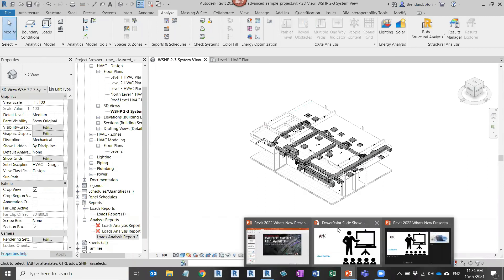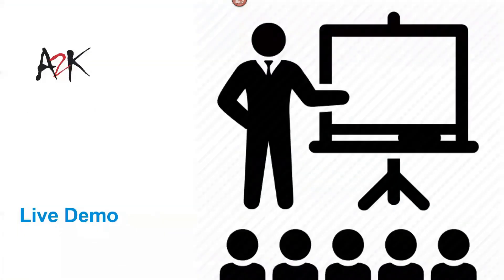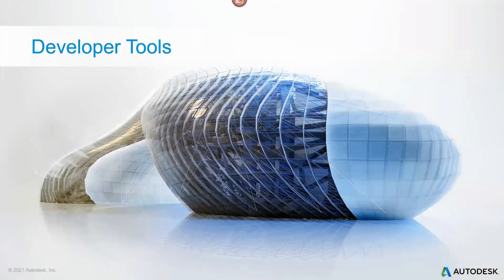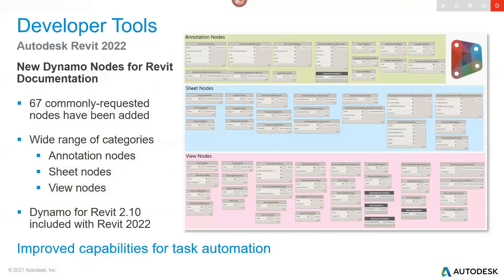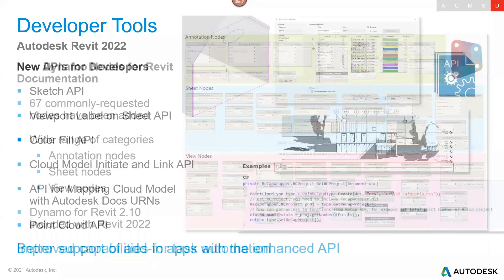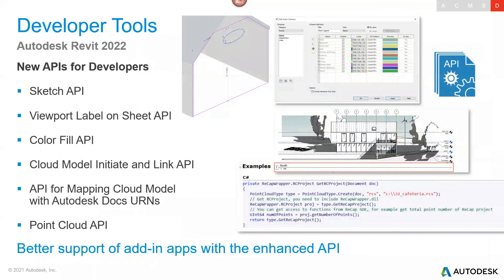For those working with Dynamo, there have been updates as there usually are. Some new default Dynamo nodes have been added — 67 commonly requested nodes — which is quite a large update. Some of you might be working with Dynamo for specific MEP workflows and tasks. The last slide covers new APIs for developers, with updates for all the APIs listed on screen, giving developers access to those new capabilities.